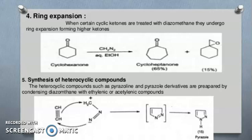Synthesis of heterocyclic compounds. The heterocyclic compounds such as pyrazoline and pyrazole derivatives are prepared by condensing diazomethane with ethylenic or acetylenic compounds.